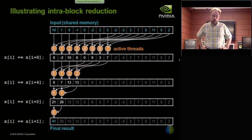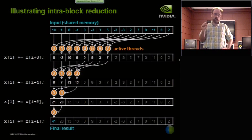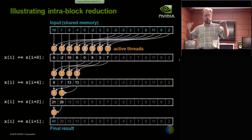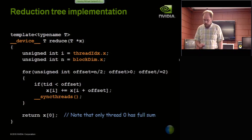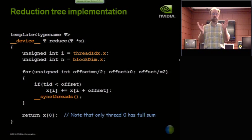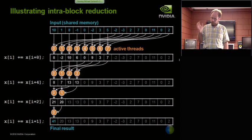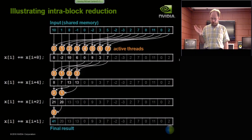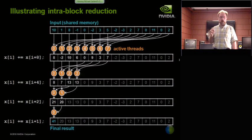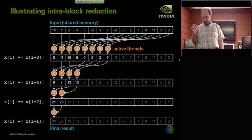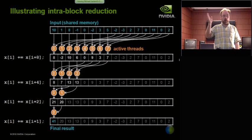That's worth emphasizing. There are two levels at which to look at what's inefficient about this kernel: the building block of doing parallel reduction within a thread block, and the kernel level of how you launch kernels and organize work. Looking at the intra-block summation picture — in the first step, only half the threads are active; those grayed out are inactive. Then a quarter, and so on — every step cuts the active threads in half.